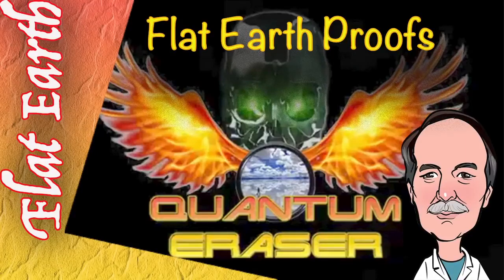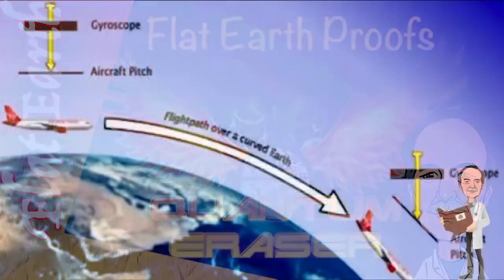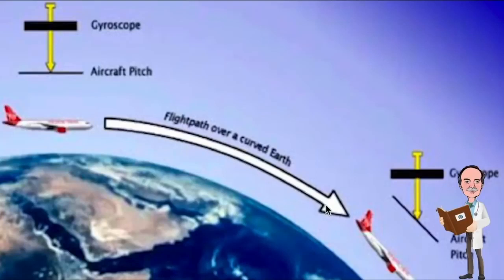Today we're taking on the second flat Earth proof from Questionable Education's website — that if the Earth was curved, aircraft would have to descend in order to conform to the curved surface of the Earth. The argument is that aircraft, left on their own, would continue to fly in a straight line, and in order to conform with the curve of the Earth, they would have to continuously decrease in altitude. Let's explore this and see how aircraft actually fly and why this is flawed reasoning.